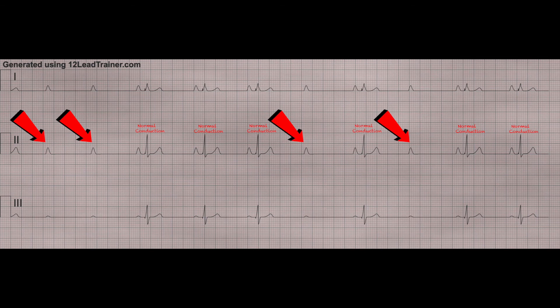Looking at the PR interval on this specific strip, it is normal, and the QRS complexes don't appear to be wide. The rate on this ended up being about 58 beats per minute, and you can definitely tell the atrial rate is faster than the ventricular rate. With these types of heart blocks, they can actually be extremely, extremely slow — which I'll show on a different strip when we talk about treatments.